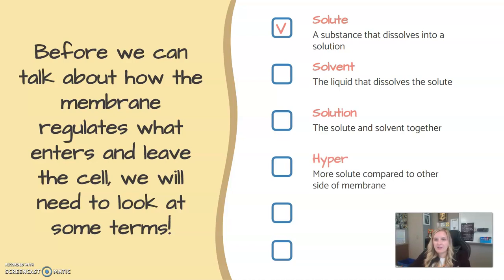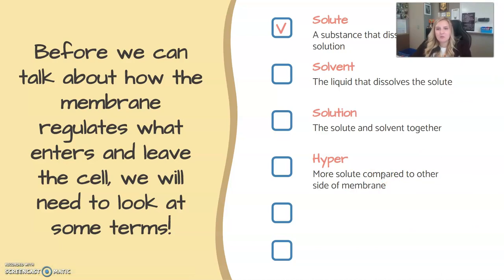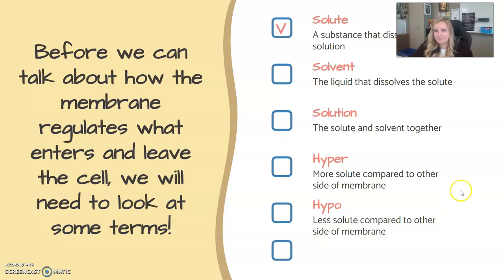Next are conditions compared to other conditions. Hyper means there's more solute in that area compared to the other side of the membrane — if the inside is hypertonic, there's more solute inside than outside. Hypo means less solute compared to the other side, so if the inside is hypertonic, the outside would be hypotonic. If both sides are equal, we call them iso — equal solutes on both sides of the membrane.